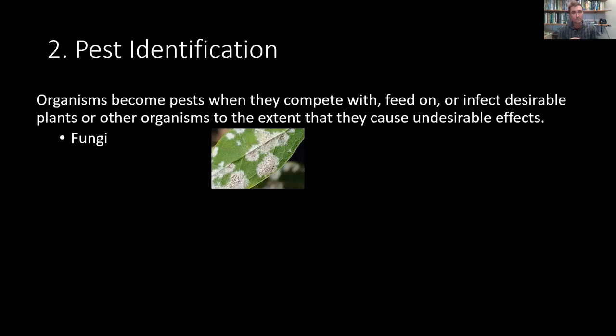They're technically closer related to animals than to plants. Most of us know of fungi as mushrooms — portobello mushrooms and shiitake mushrooms. In actuality, the mushroom is just a small piece of the entire organism. What the fungus is mainly composed of is an underground network of cells in strands or filaments, and those cells are called hyphae.